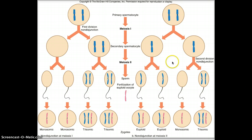Now this is showing non-disjunction occurring in sperm. Non-disjunction can also occur in eggs, and then they would be fertilized with hopefully a normal sperm, but you would come up with the same issue with the fertilized eggs.